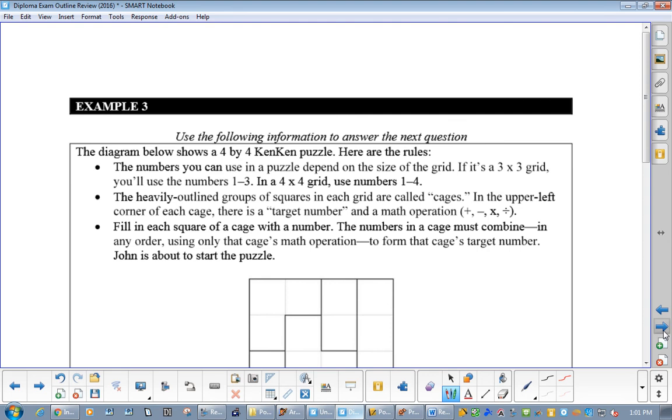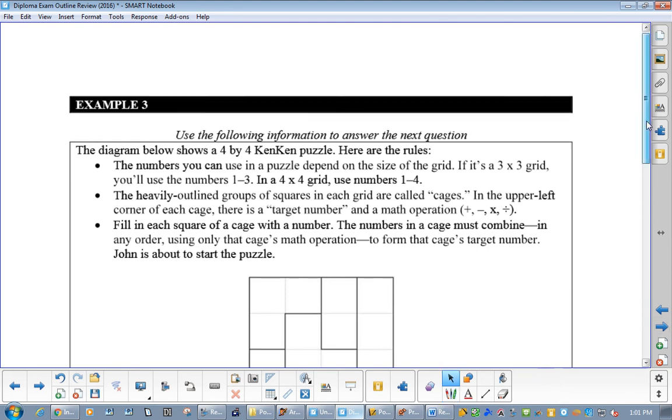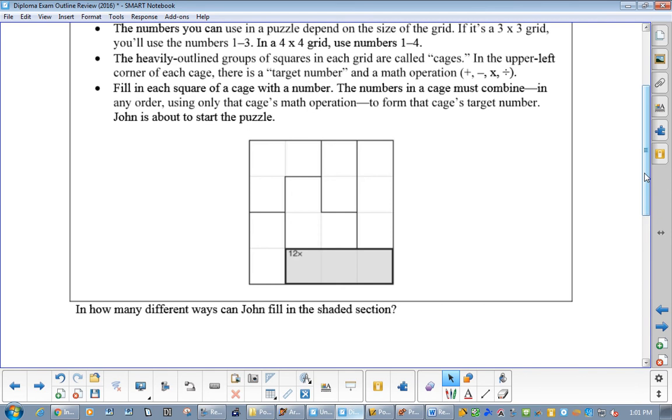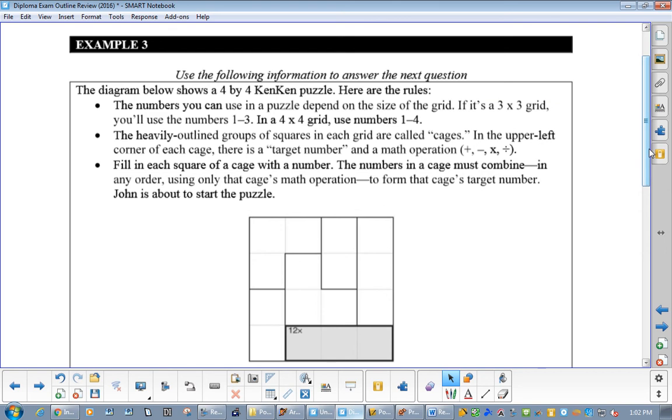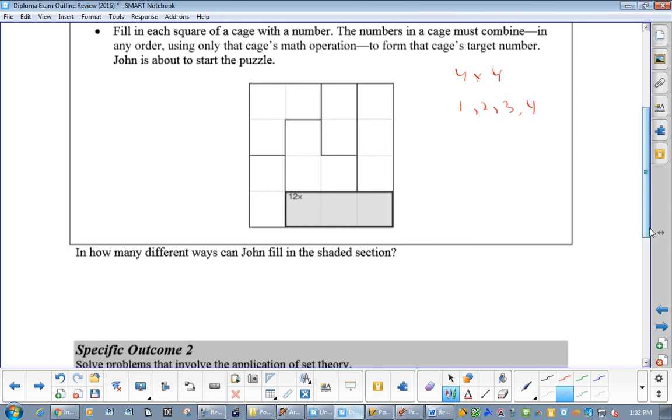Remember, we did these. I don't know how well yours photocopied, but there is these light little lines. So, maybe just draw them in really lightly, because it kind of looks like they're rectangles, but they're not. They're all squares. Now, the numbers. So, this is a 4 by 4. For a 4 by 4, you can only use the numbers 1, 2, 3, and 4. And it asks, how many different ways could John fill this in?